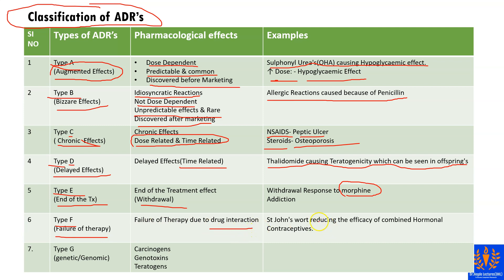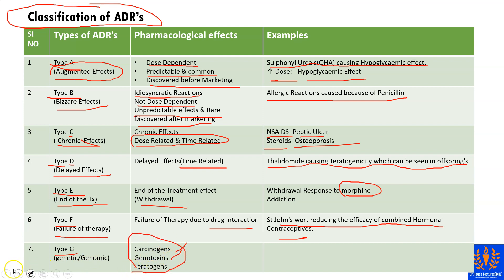An example of Type F interaction effects: combining St. John's Wort reduces the efficacy of combined hormonal contraceptives. Type G stands for genetic and genomic effects, mediated by carcinogens, genotoxins, and teratogens.